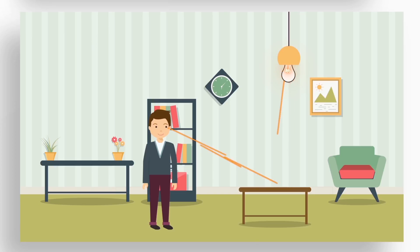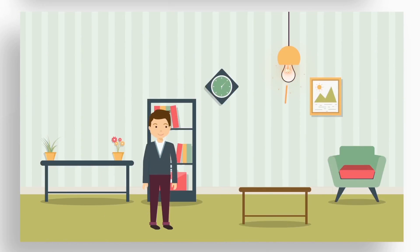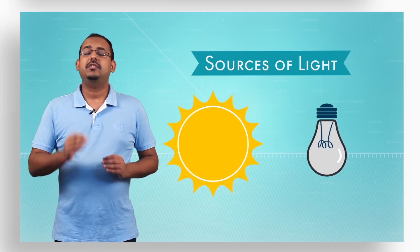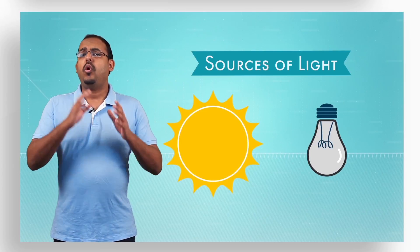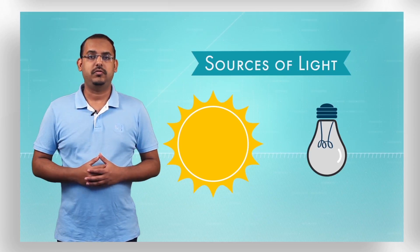But then where does this light originate from? What is the origin from where this light comes? Well, we all know that in day time we are able to see all the objects which are around us with the help of the light of sun. And at night time we use electrical appliances like bulbs and tube lights to help us see all the objects which are around us. Now these are what are called as sources of light. So all the objects or things which provide us with light energy are what are called as the sources of light.